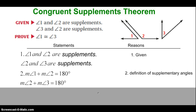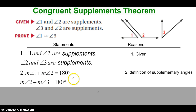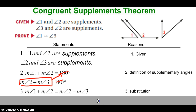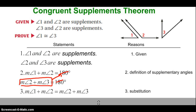What you'll notice is that you have these two equations, and both equations equal 180 degrees, so there is an equality between them. We can use our substitution property, substituting the expression for the measure of angle 2 plus the measure of angle 3 in for that 180 degrees. So statement 3: the measure of angle 1 plus the measure of angle 2 equals the measure of angle 2 plus the measure of angle 3.